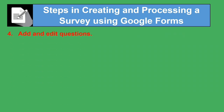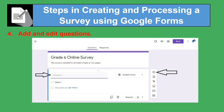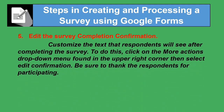Fourth, add and edit questions. Fifth, edit the survey completion confirmation — customize the text that respondents will see after completing the survey. To do this, click on the 'More Actions' dropdown menu in the upper right corner, then select 'Edit Confirmation.' Be sure to thank respondents for participating.